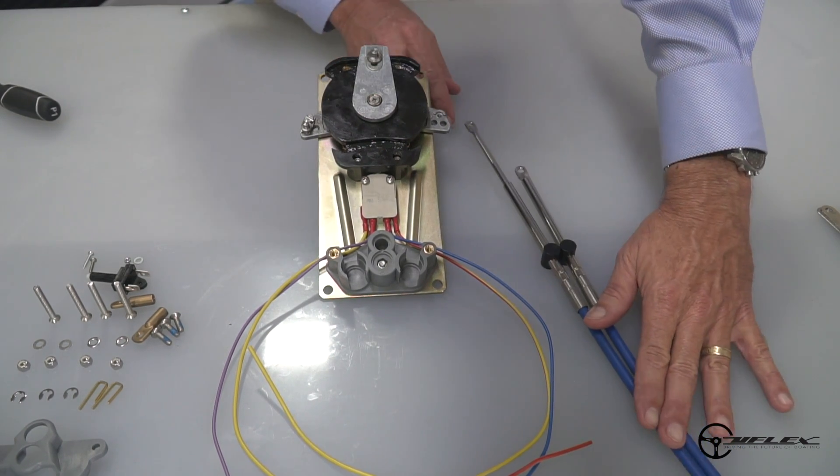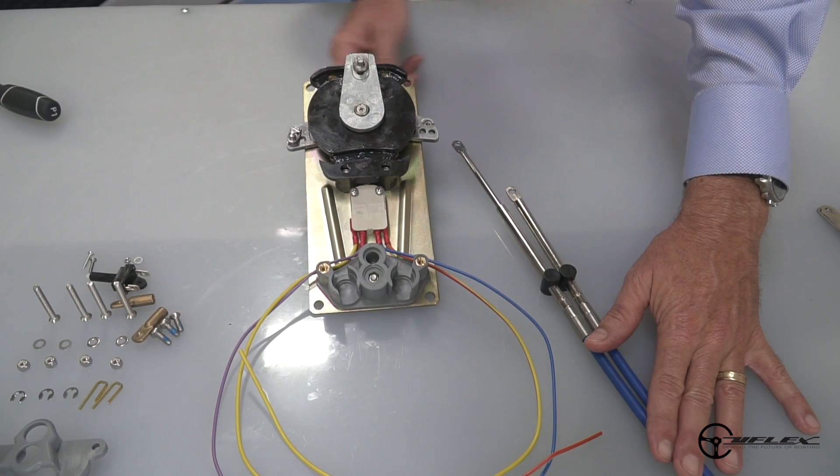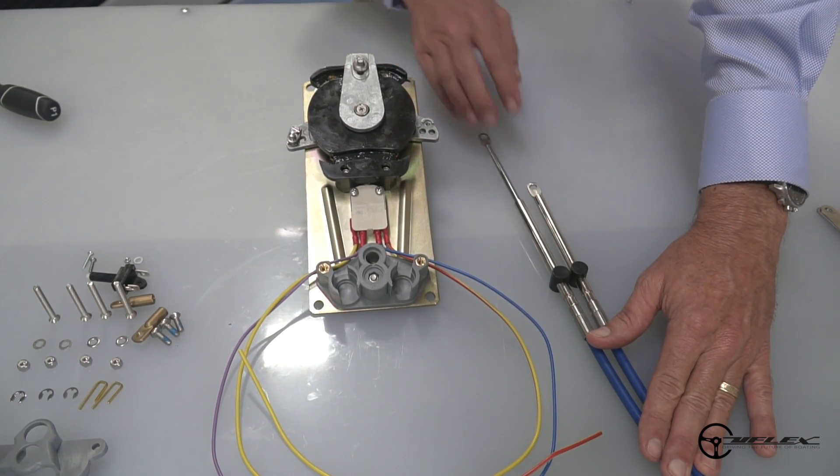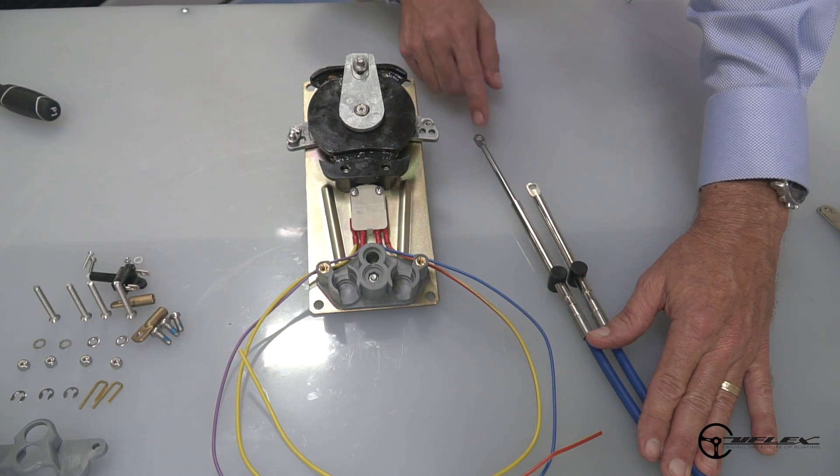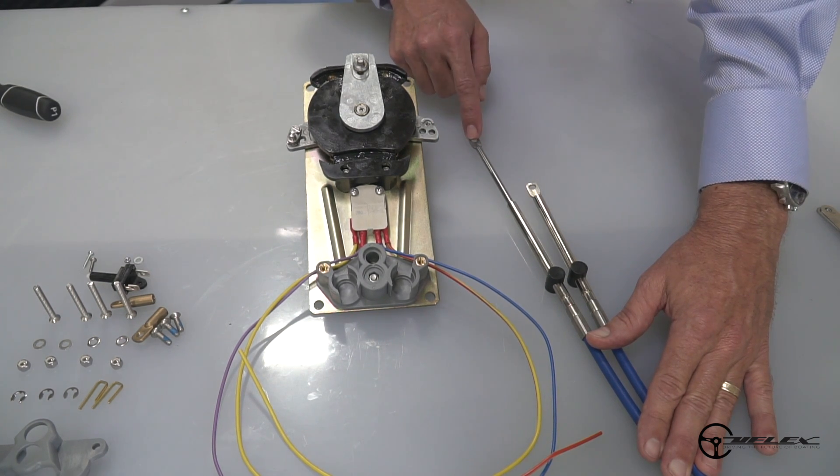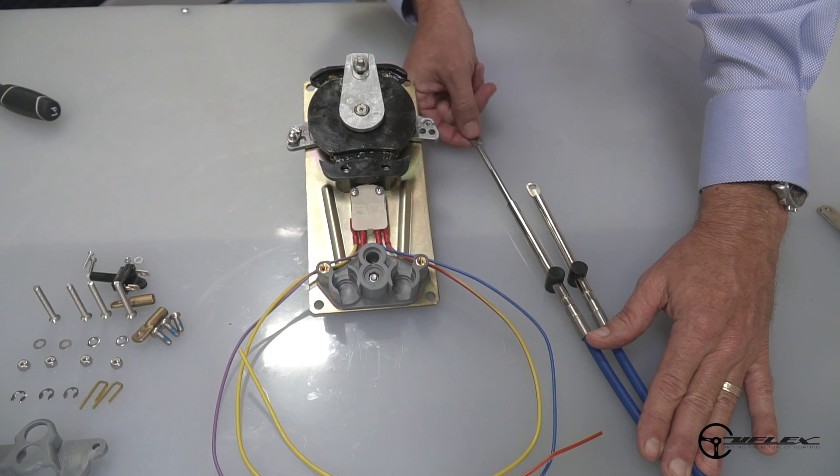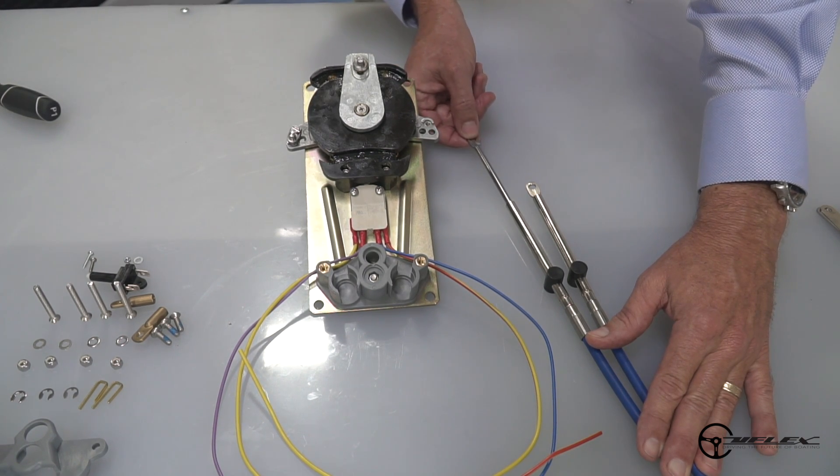These two cables give you some indication. If they are installed on the engine and when the engine is at the idle position and the cable is all the way out like this up here at the control end, then I know that it's going to be push for throttle.